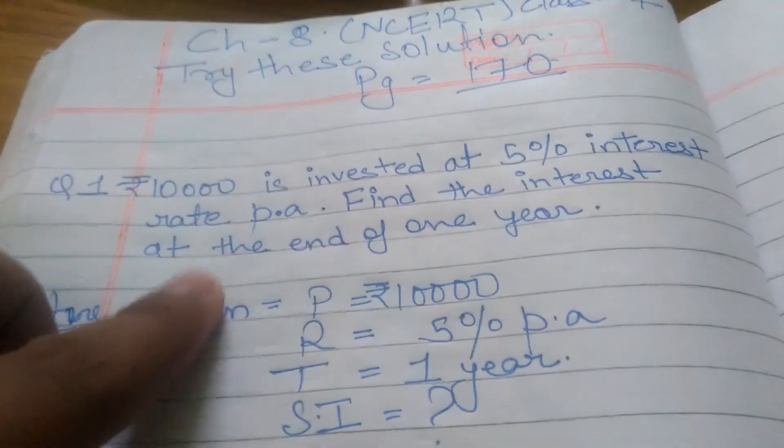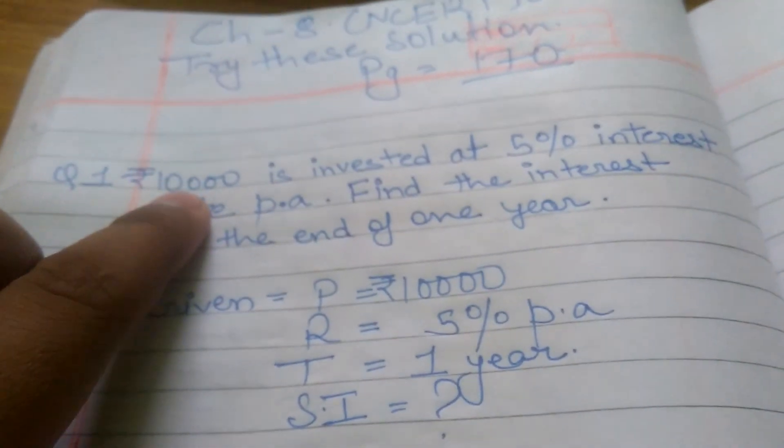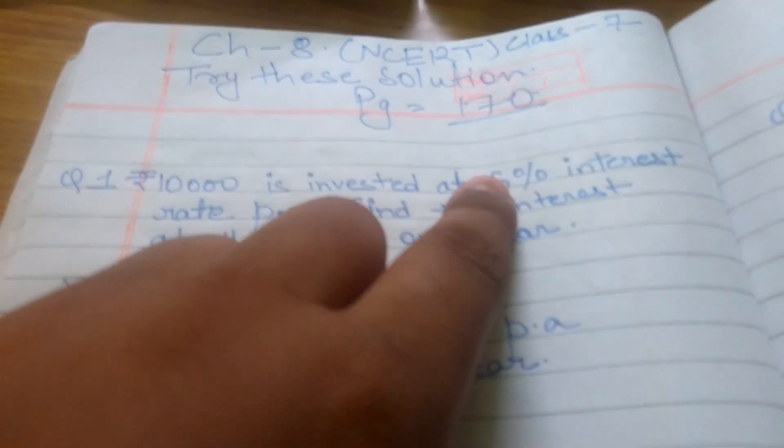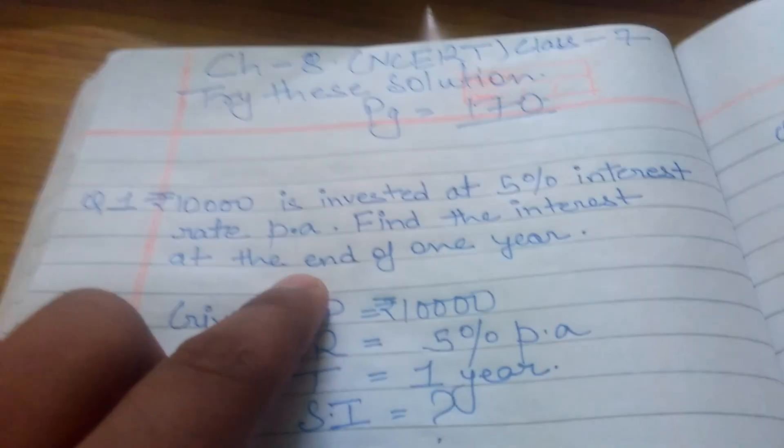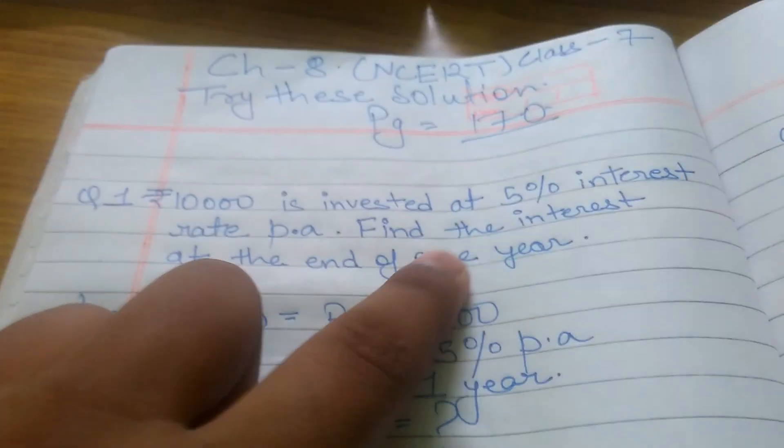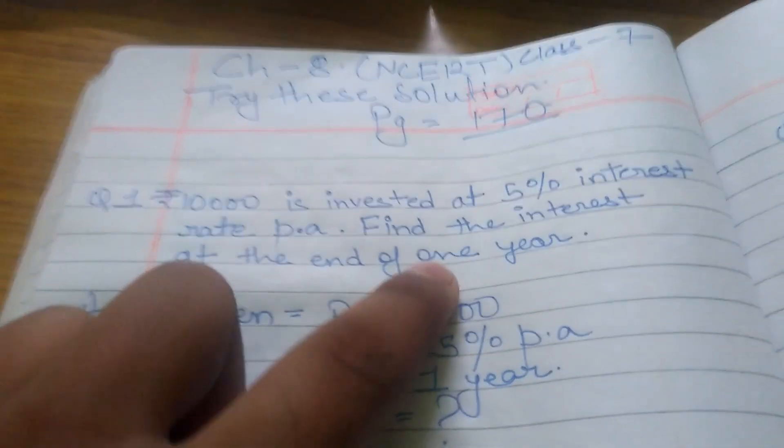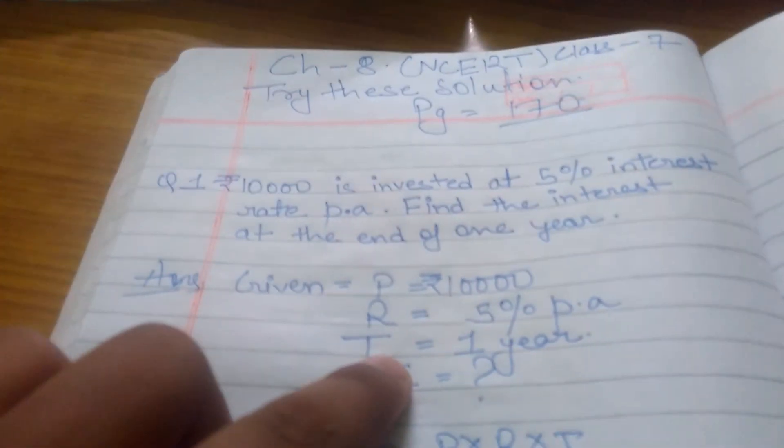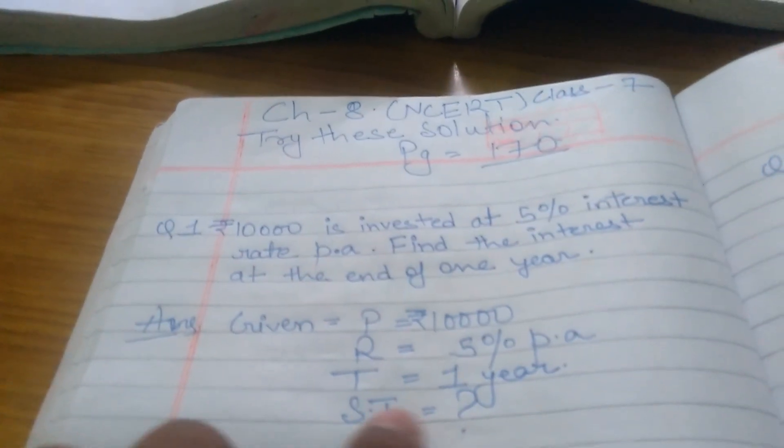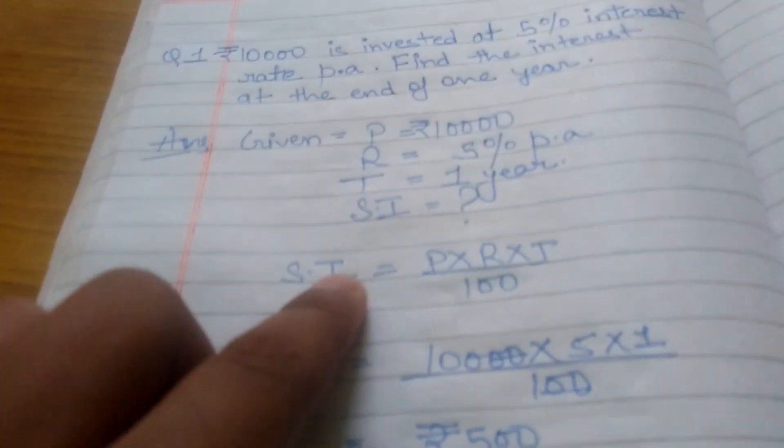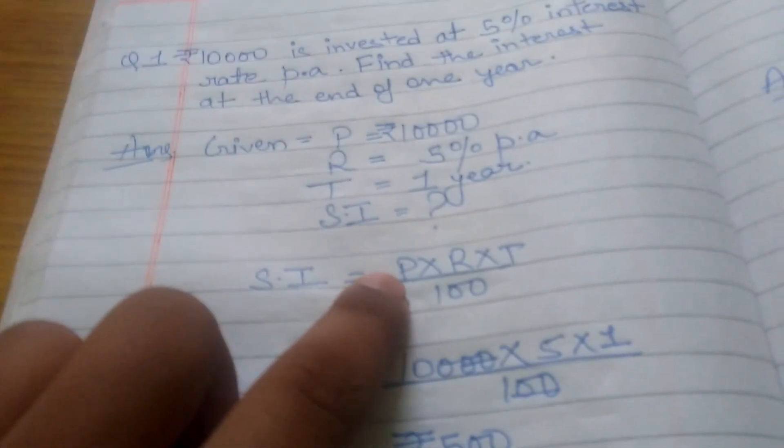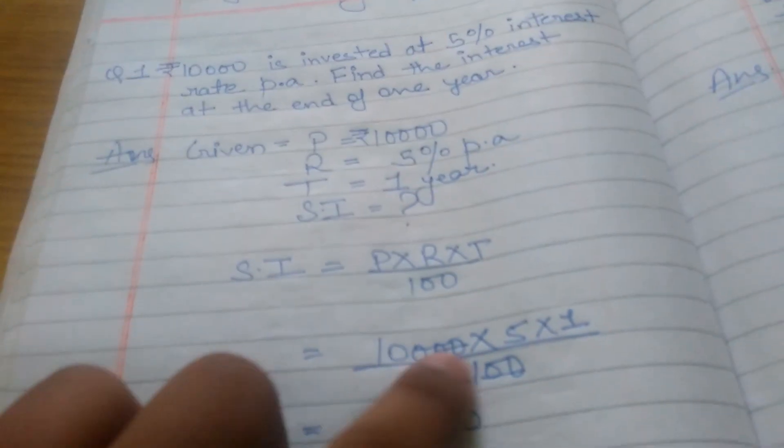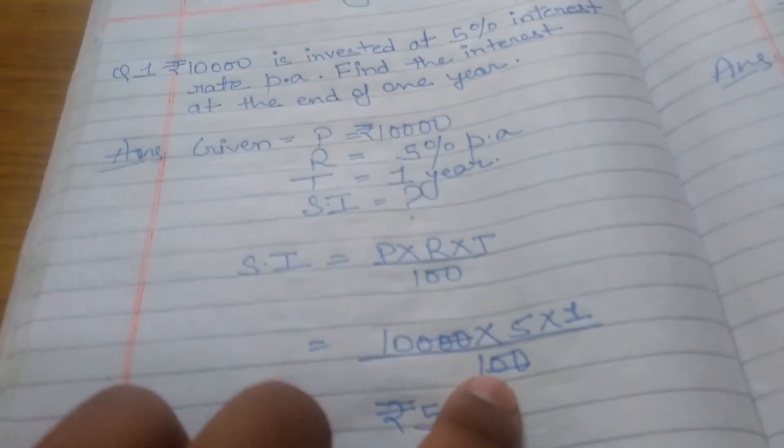First we will write 'Given'. In this question there is given that Principal P = ₹10,000, Rate R = 5%, and Time T = 1 year. We have to find Simple Interest. The formula for Simple Interest is: SI = (P × R × T) / 100.